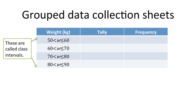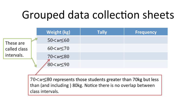That first class interval, for example, means all those people who had a weight between 50 and 60 kilograms. The extra mark on the inequality sign by the 60 means that we include 60 in that particular class interval. On the second row we also start from 60, but the inequality on that row shows us that we don't include 60 on that row. It's for that reason that we must make sure there are no overlaps on our grouped data collection sheet, because if you have an overlap you won't know when recording where to put a certain individual.